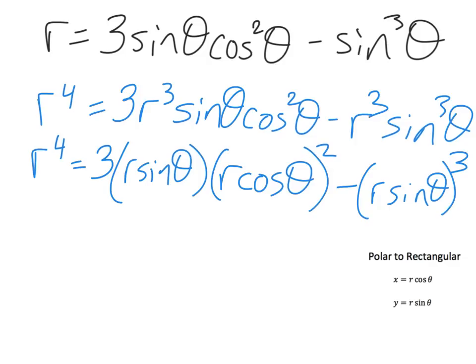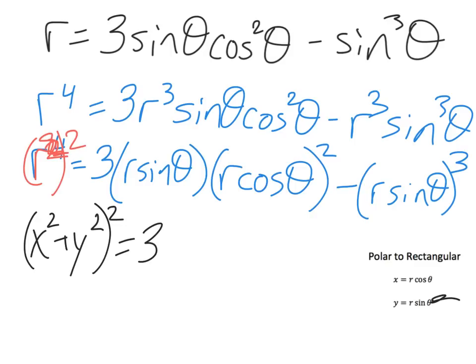So now this one right here could be rewritten as, instead of saying r to the fourth, I could say that this is r squared squared. That's messy, but do you see what I'm trying to, oh, I just made it worse. My bad. Okay, you know where I'm going with that. r squared we know to be x squared plus y squared, well, it's r squared, squared is equal to this is 3 r, r sine theta right here is y, and then this becomes r cosine theta is our x, but that's x squared minus that's a y cubed. And this, believe it or not, is an answer that your textbook would accept.